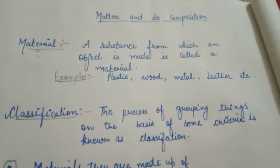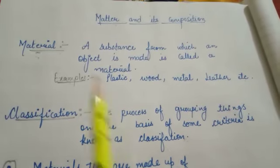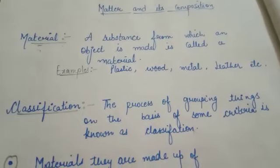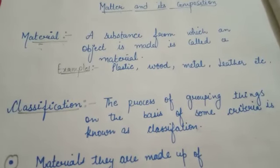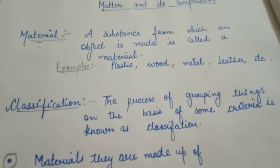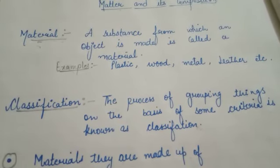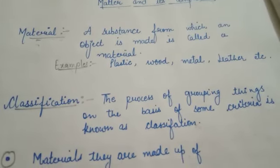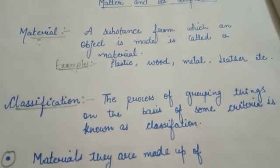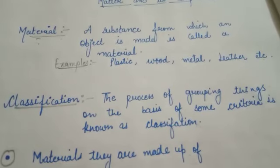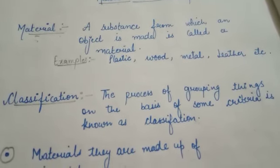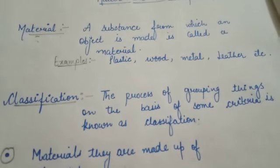Before defining matter, first of all we should learn about the materials. So students, look around yourself. You will find there are various objects around you like pen, pencil, eraser, geometry box, bed, chair, table, etc. Do these objects have the same shape, size or color? No, because different objects have different shape, different size and different color.